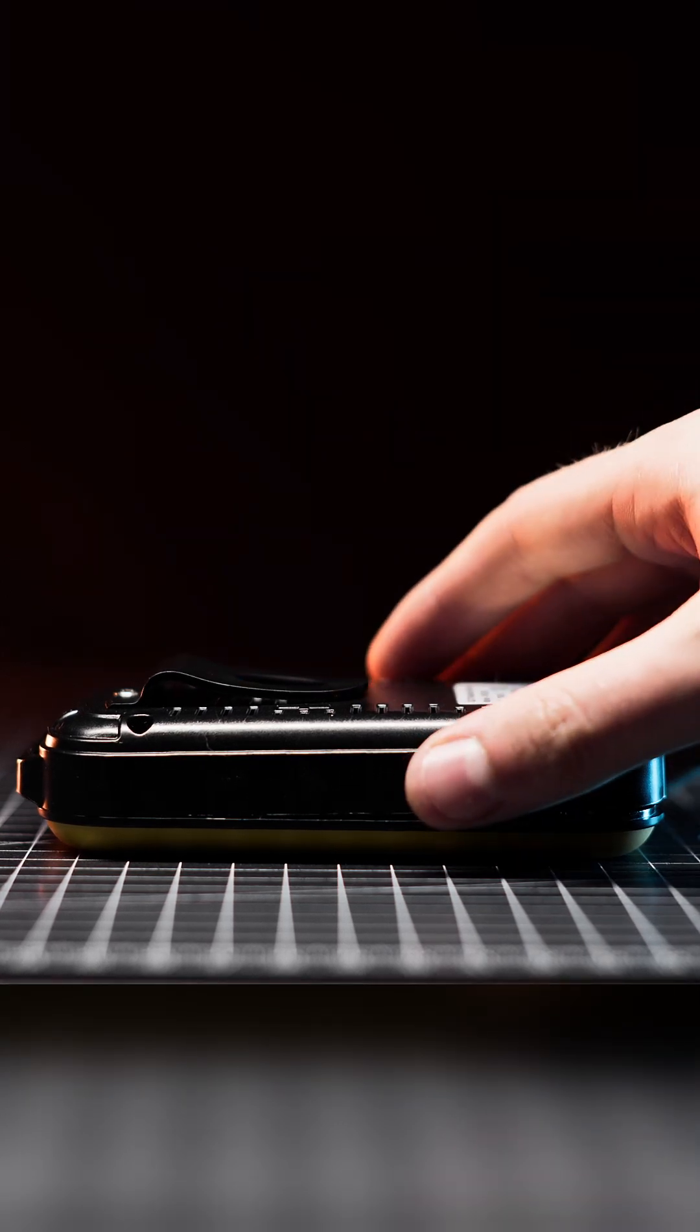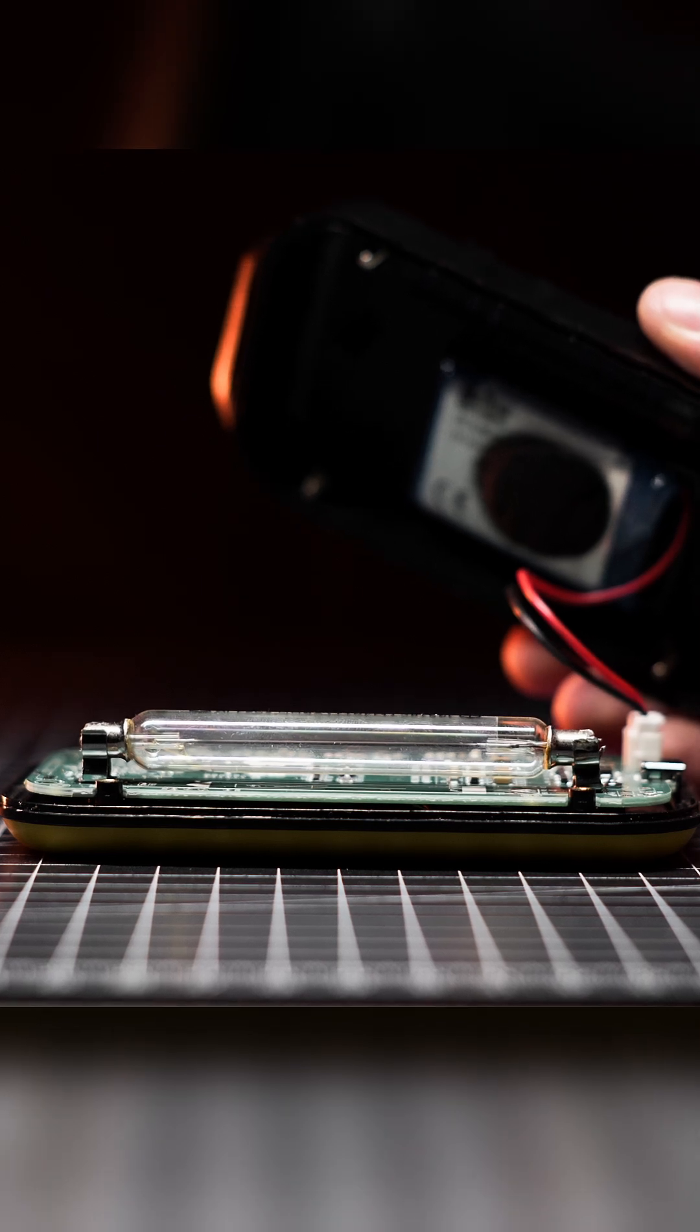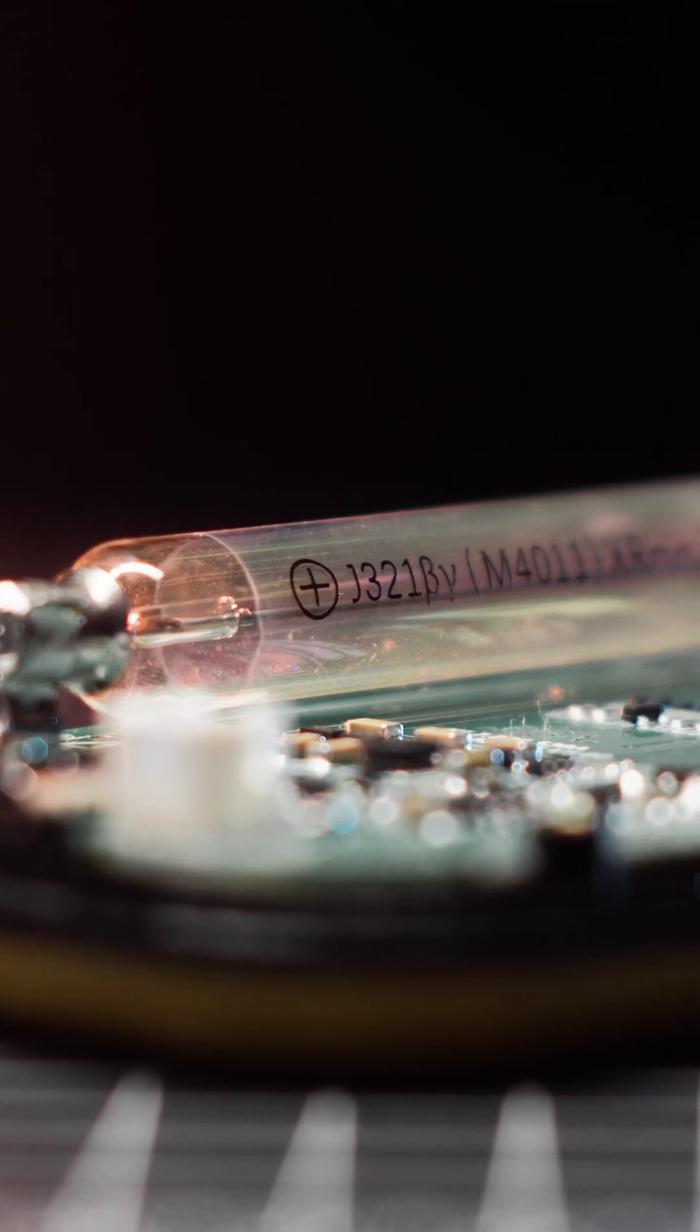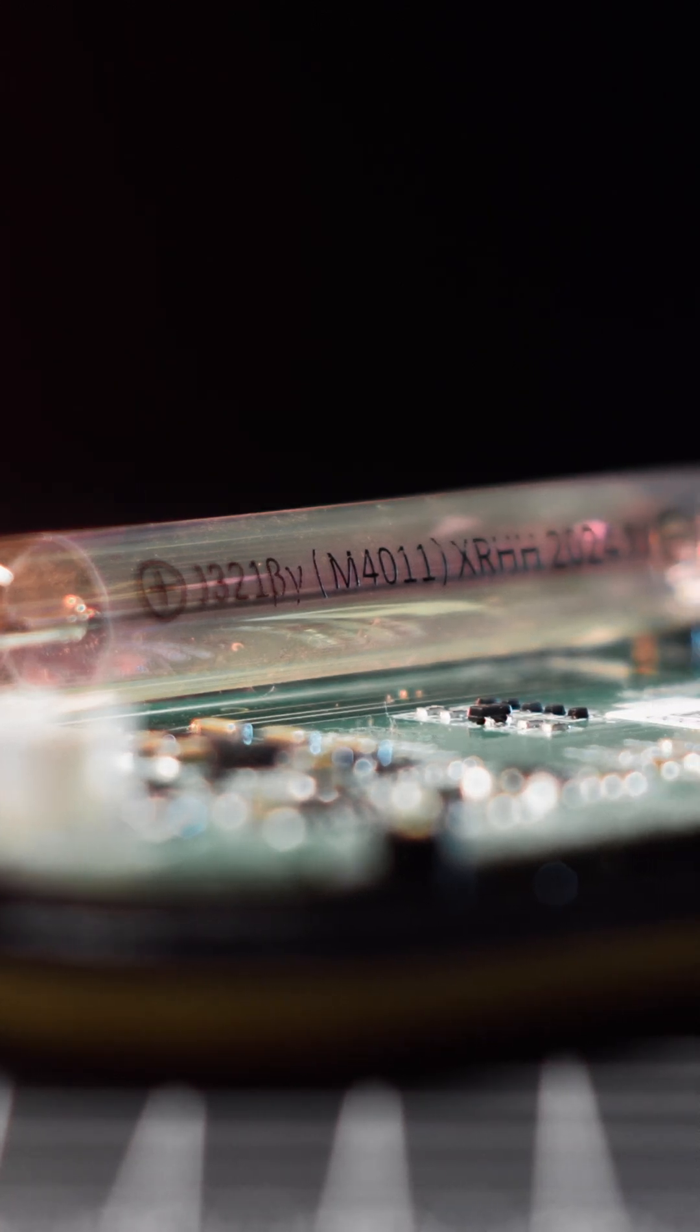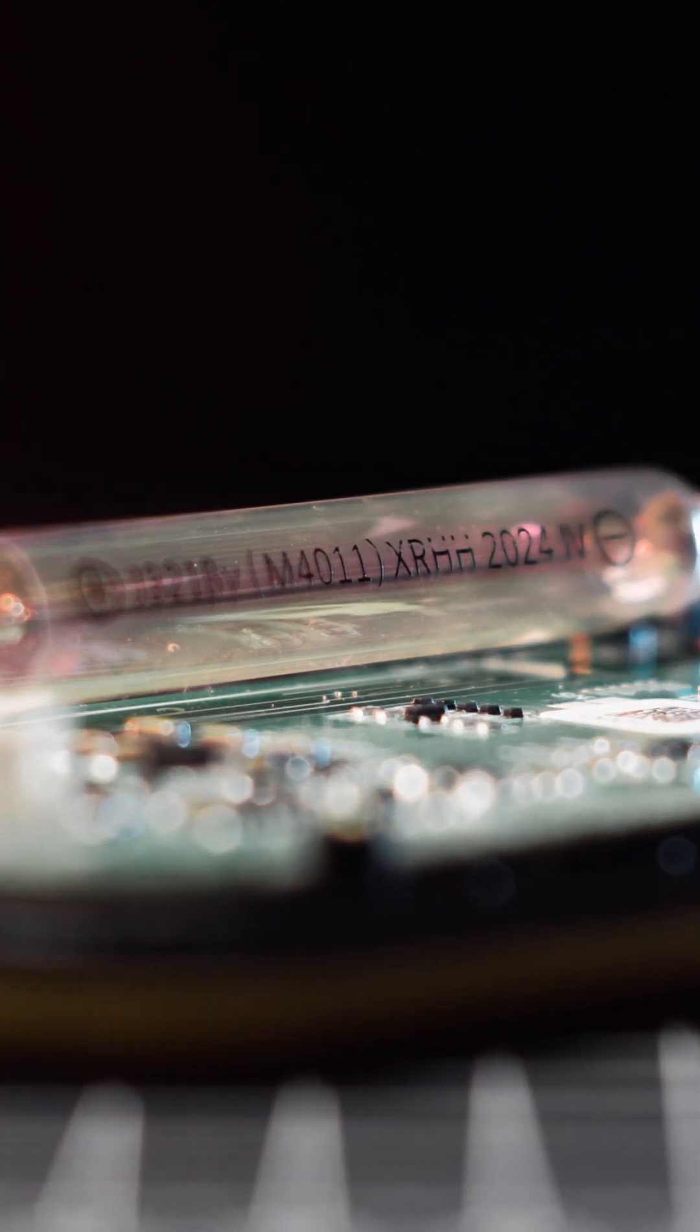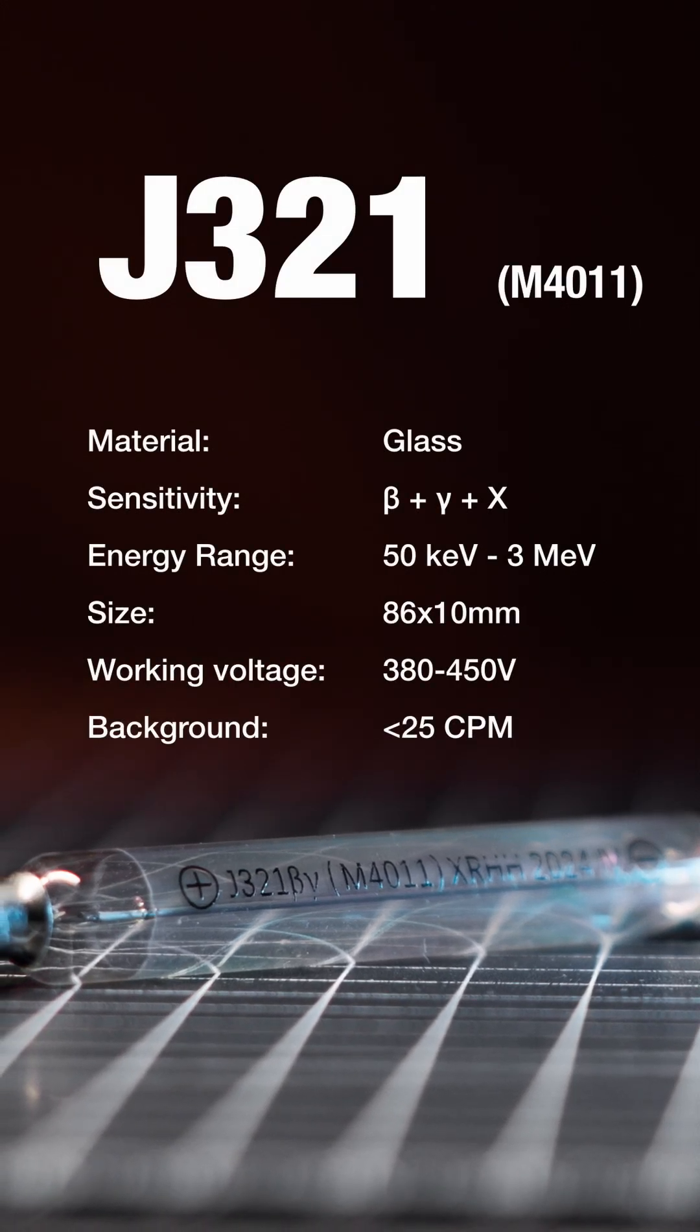The Geiger Müller tube used by this meter is the J321, which is a Chinese glass tube, and it is ok. It gives around 20 CPM of background, and it is able to detect hard beta, gamma, and X-ray radiation. Compared to other Chinese tubes it is definitely much better, but I still wouldn't call it an ideal design.